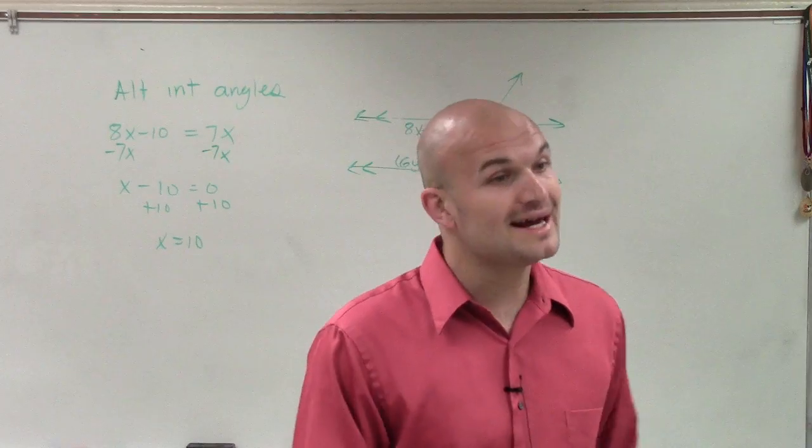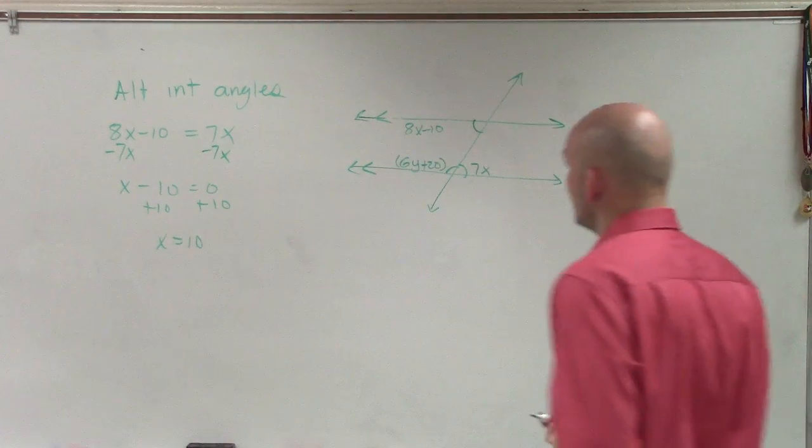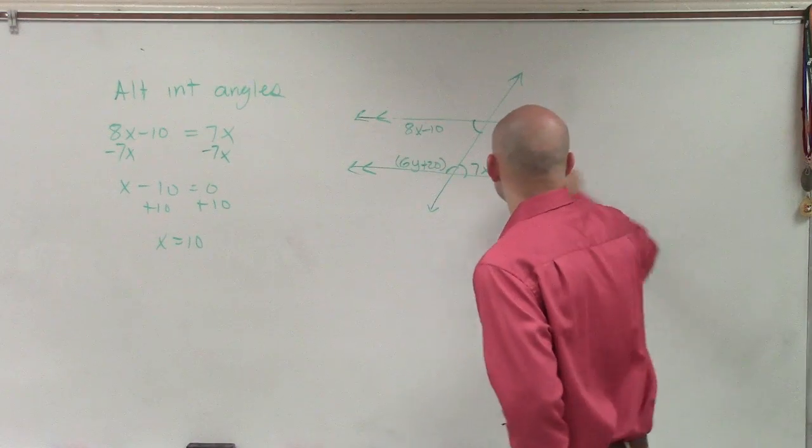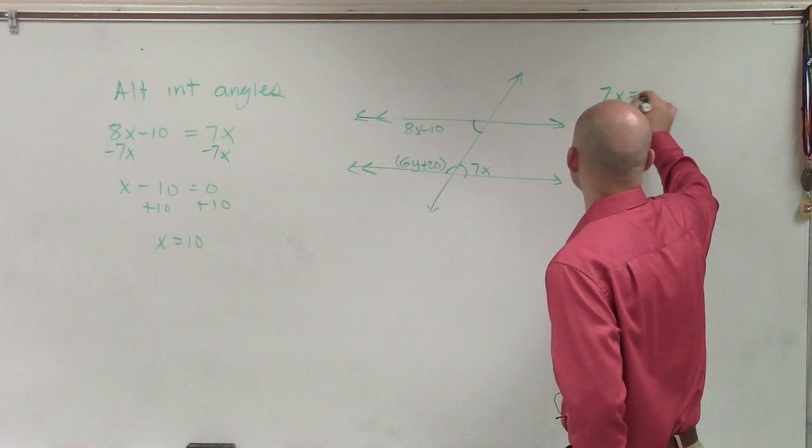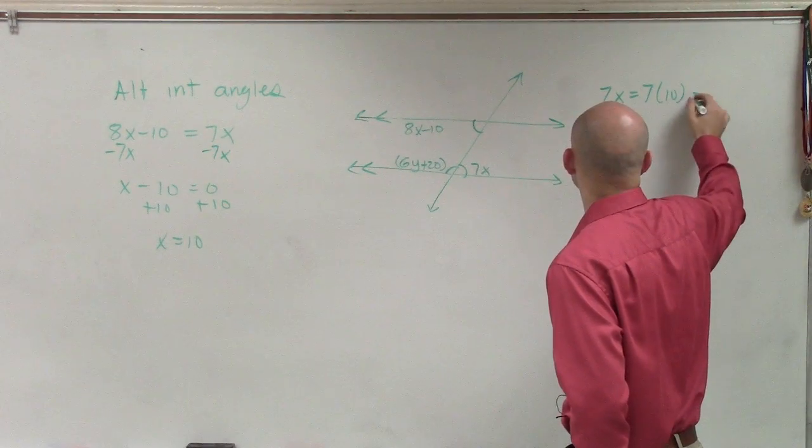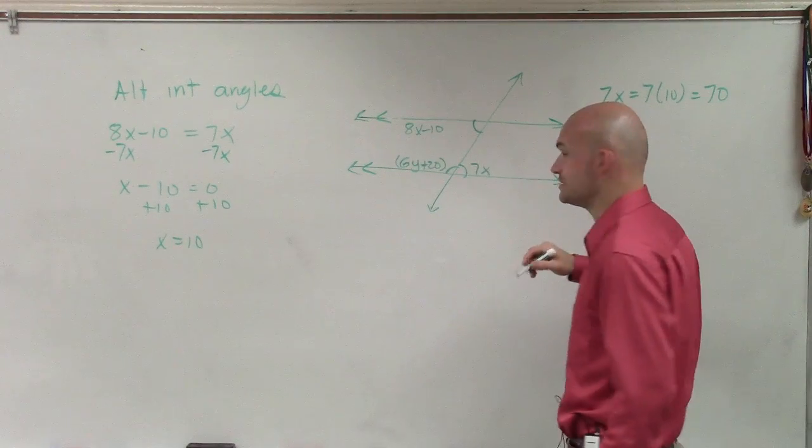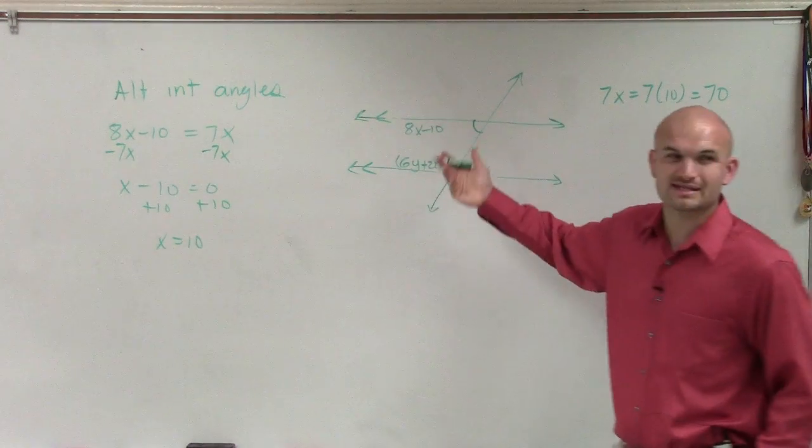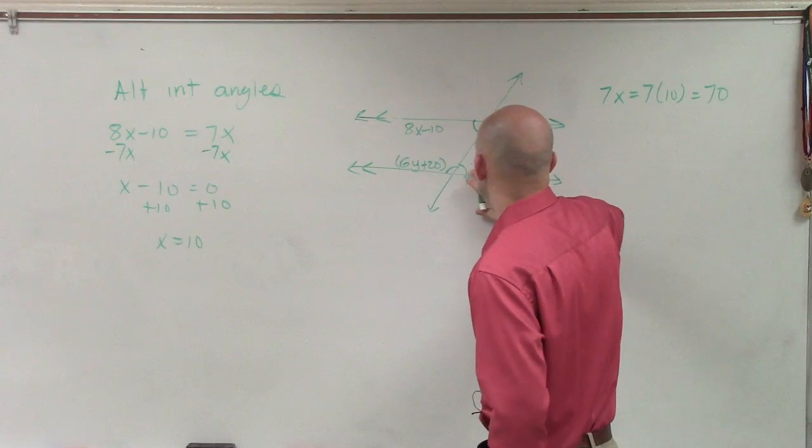Now we found that x equals 10, but we're not done yet. Because now, if we know that x equals 10, then this angle would be 7x, which would be 7 times 10. Therefore, we could say that that angle is equal to 70 degrees. So rather than just writing 7x, let's write in this angle as 70.